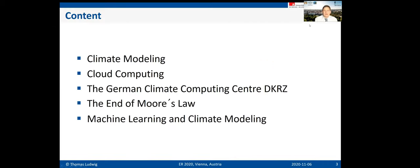Let me start with a short overview. First, I'll give you some insight into how climate modeling is done on a computer. Then we'll speak about cloud computing, the German Climate Computing Center DKRZ here in Hamburg, and then the problems of high-performance computing connected to transistors and Moore's Law. Finally, we'll look at some aspects of machine learning and climate modeling.